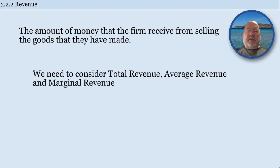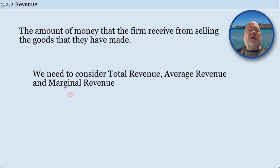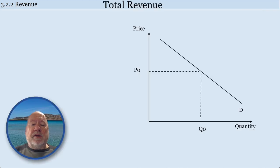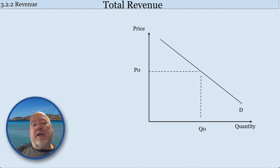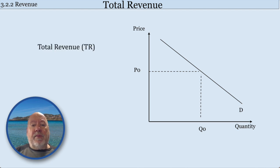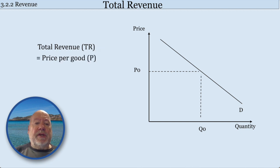In building up your model of the behaviour of firms in the theory of the firm section of microeconomics, you've got to look at total, average, and marginal revenue. So if you remember from first year, in any particular market you've got a demand curve, you've got the price and the quantity. Now we're looking at the total revenue that is earned in that marketplace, and the total revenue is simply the price per good times the quantity sold.